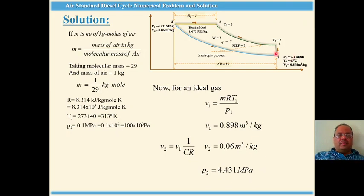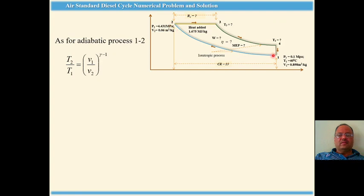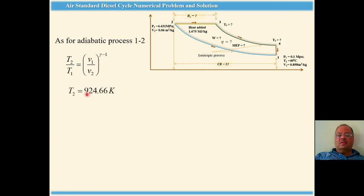The major parameters at prominent points of the cycle are: at point 1, we have P1, V1, T1; at point 2, we have P2 and V2. For the adiabatic process from 1 to 2, T2 upon T1 equals (V1 upon V2) to the power gamma minus 1. So T2 equals T1 multiplied by the compression ratio to the power 0.4. With T1 equal to 313 K and compression ratio 15, T2 comes out to be 924 kelvin.